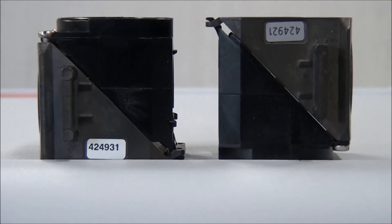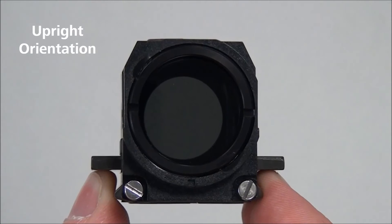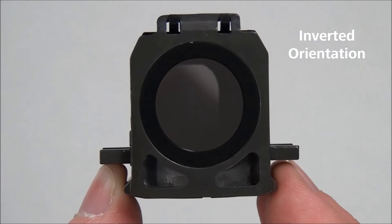To install the reflector module, simply reverse this process. First, make a note of the correct orientation for the reflector module, shown here, before inserting it into the reflector changer. With its wings facing you, grasp the reflector module with your thumb and forefinger.